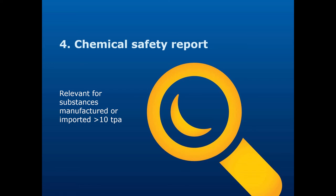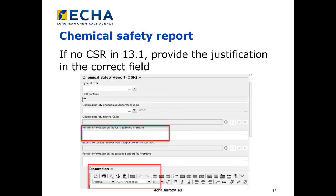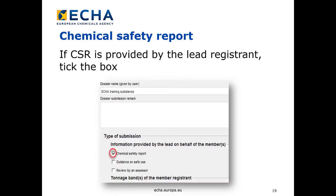Then we move on to chemical safety reports, which are relevant for substances manufactured or imported at more than 10 tons per year. If a chemical safety report is not attached, a justification why it is not required should be included in IUCLID section 13.1, in the field 'further information on the CSR attached / remarks' or the field 'discussion', which are highlighted in this screenshot. If you are a member of a joint submission and the lead has provided the chemical safety report on your behalf, remember to indicate this in the dossier header under 'information provided by the lead registrant on behalf of the members' when you create your dossier, as in the example on the screenshot.